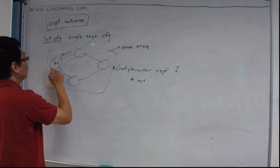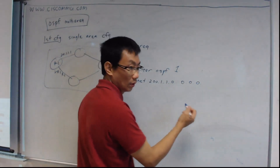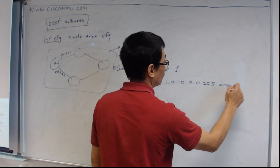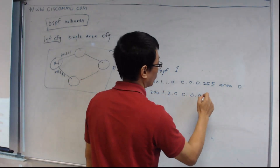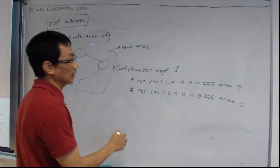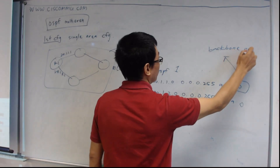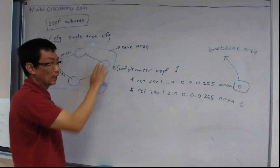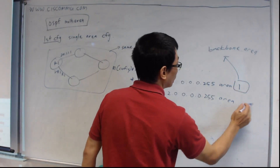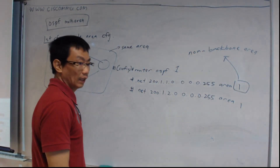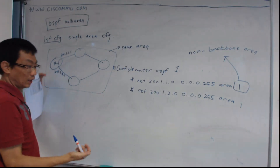So the full network command is: network 200.1.1.0 0.0.0.255 area 0. The area 0 here represents the backbone area. If you decide this is not a backbone, you can put area 1, area 1, which means it's a non-backbone area. Area 1 is non-backbone. All routers must be in the same area for the initial configuration.